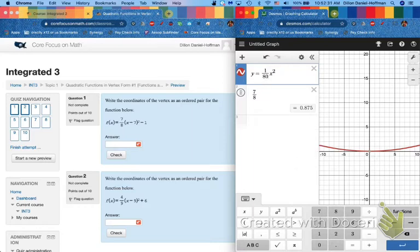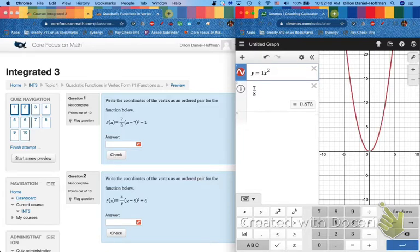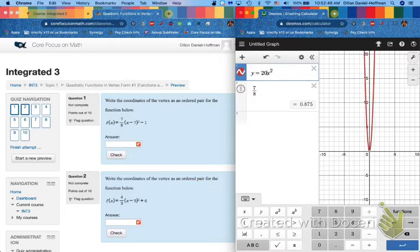The smaller my fraction the more shrunk, the more wilted like a flower this parabola becomes. However if I add a whole number in front that's getting larger and larger, then my parabola becomes vertically stretched. It's like a rubber band that gets pulled up and becomes skinnier and skinnier.